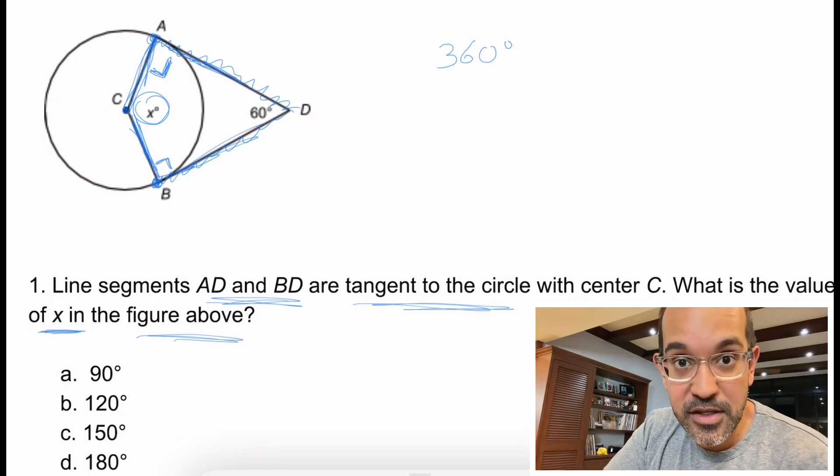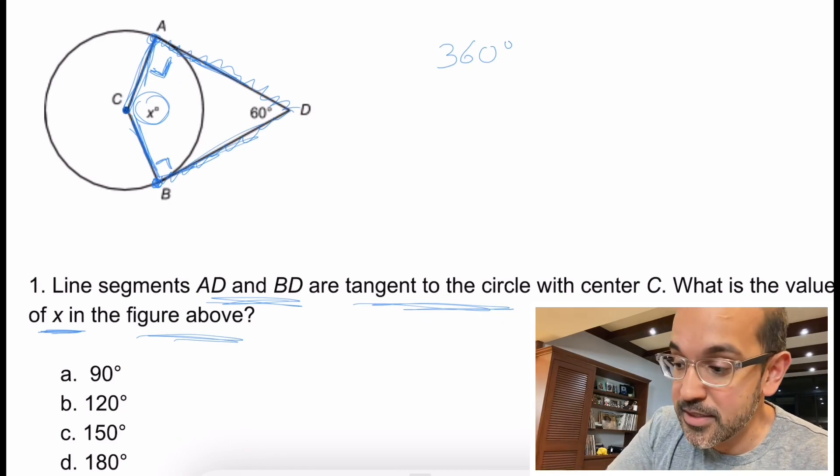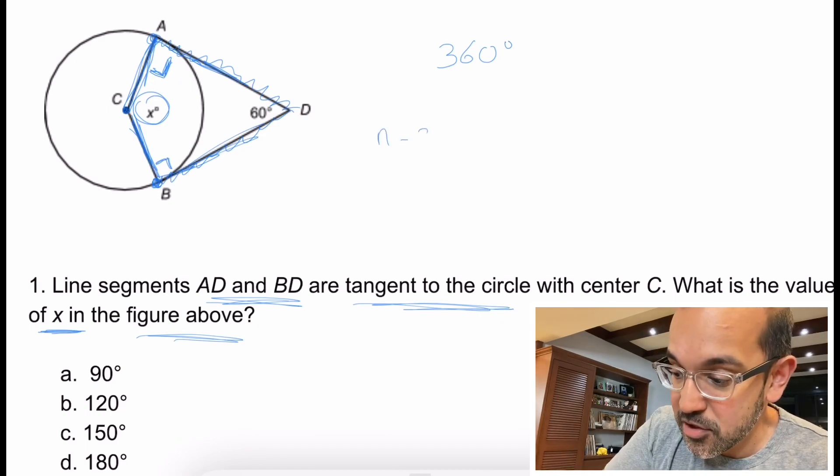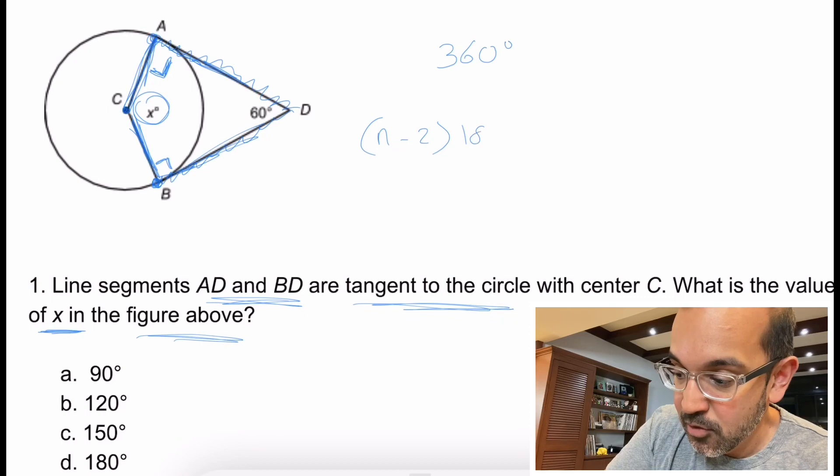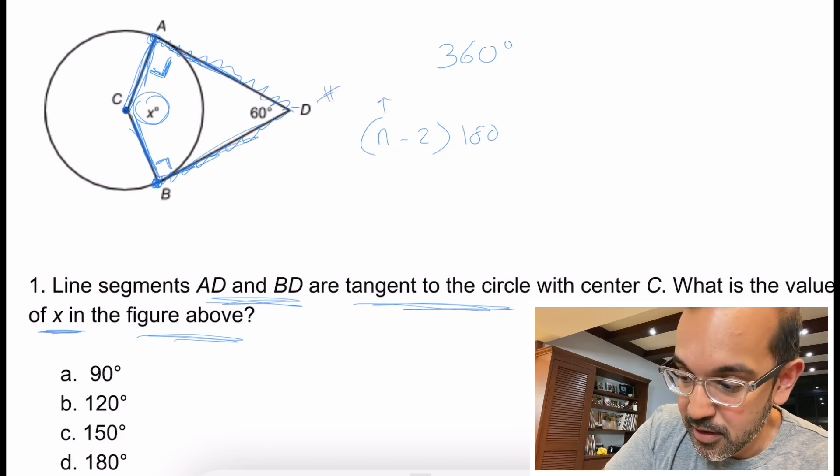And one rule for any figure, if you're trying to figure out the total number of degrees, it is N minus 2 times 180, where N is the number of sides. So here, if we know that our total is 360 degrees, all we have to do is say 360.